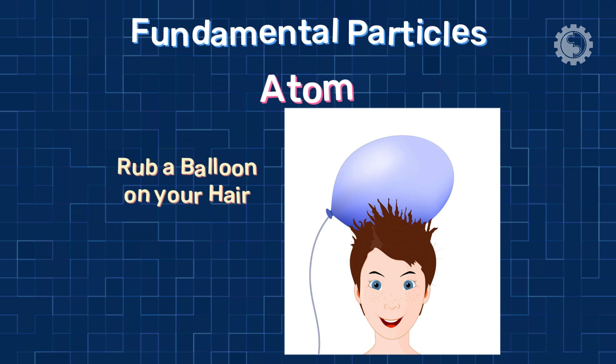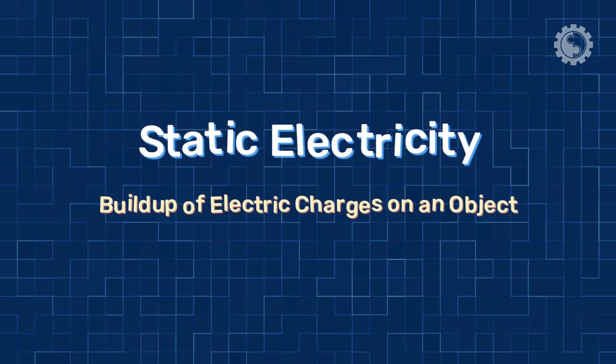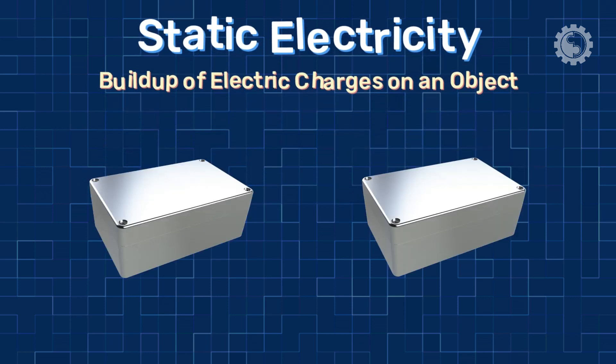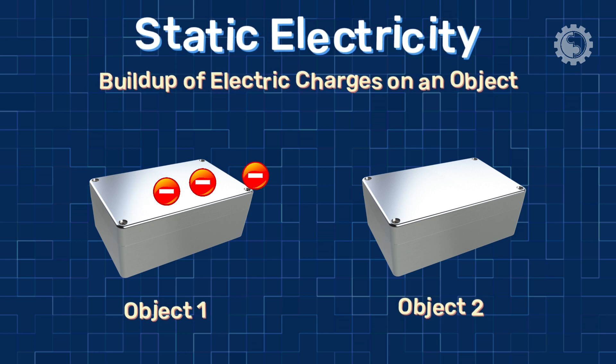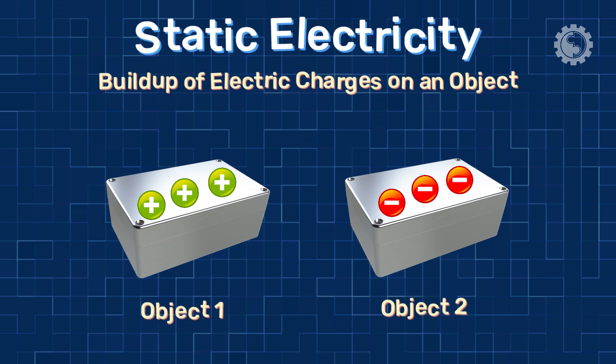So we call this static electricity. Static electricity is the buildup of electric charges on an object. This happens when electrons are transferred from one object to another. The objects with opposite charges will then attract each other.